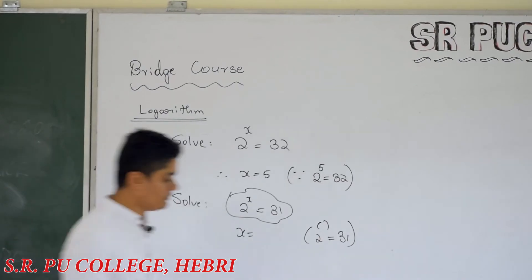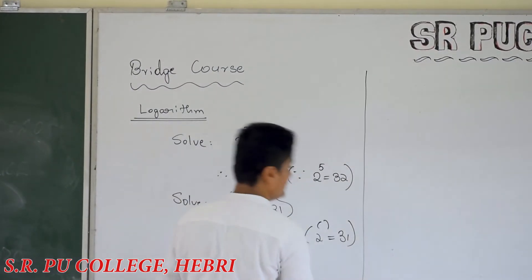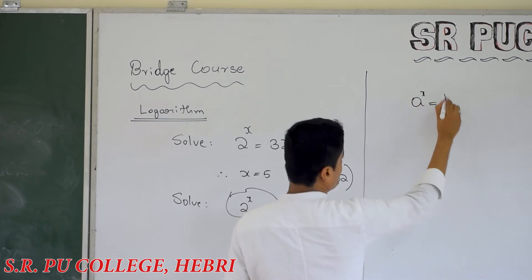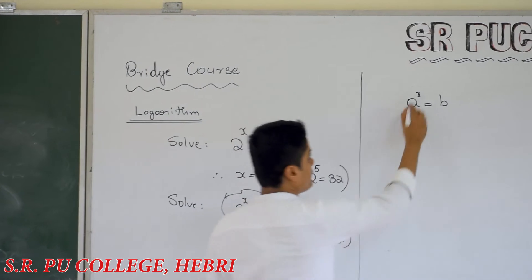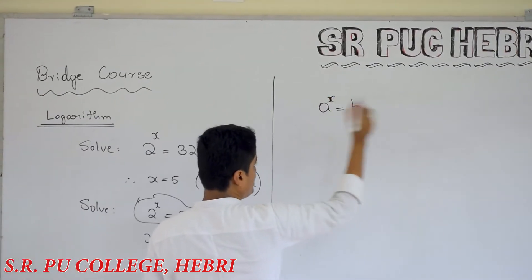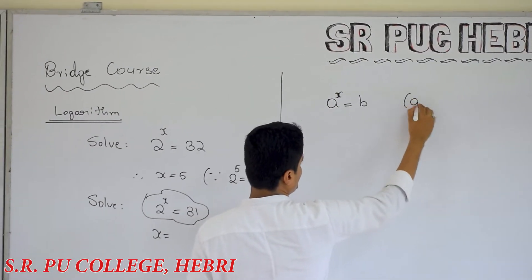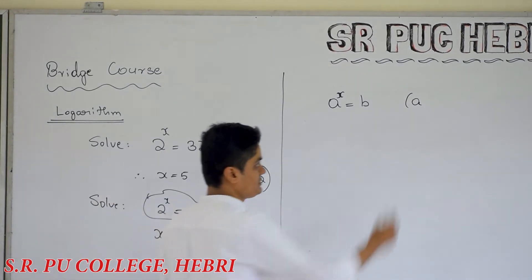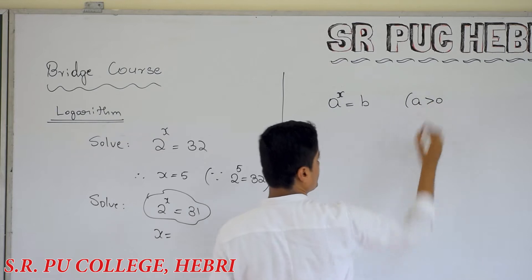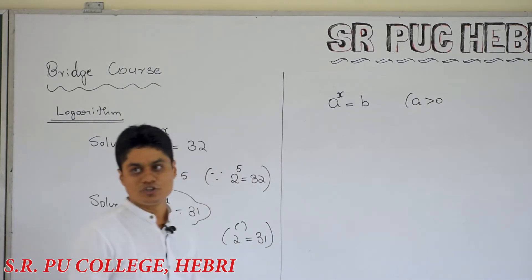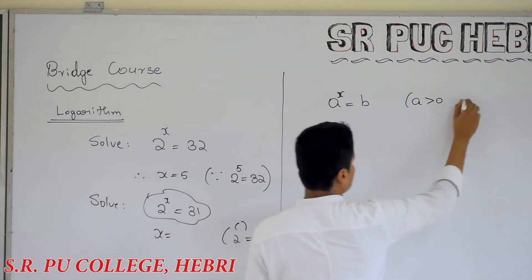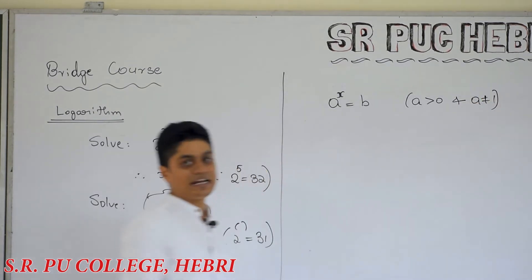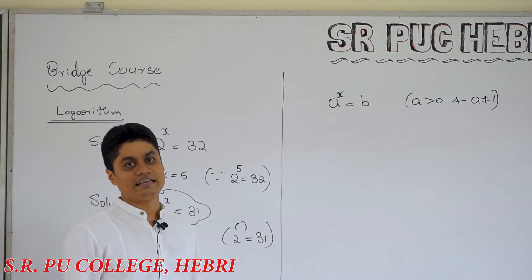When this topic was introduced in mathematics, suppose you want to solve an equation a power x is equal to b. There are some restrictions, which you studied in indices in 10th standard: the base should be greater than 0, the base cannot be 0, and the base should be different from 1. If base is 1, it will become an identity — it will not remain as an equation.